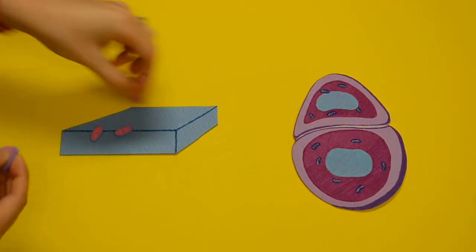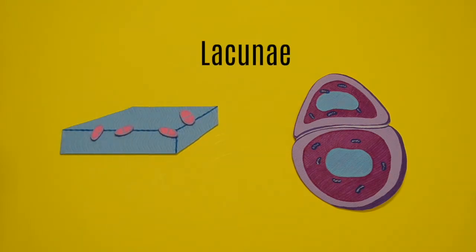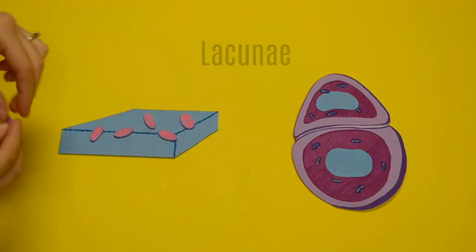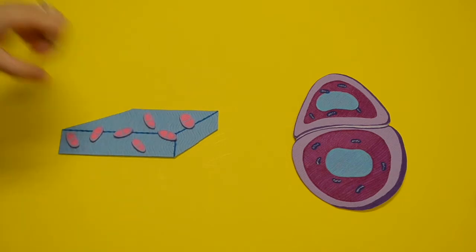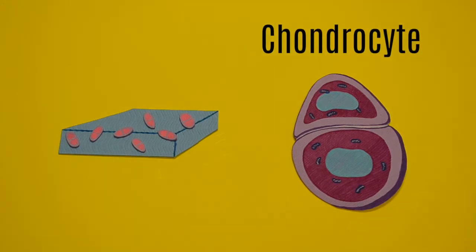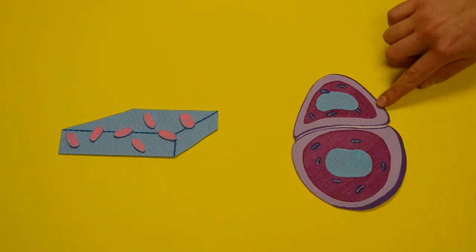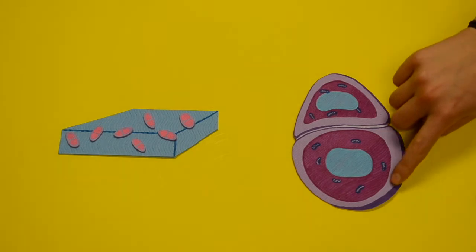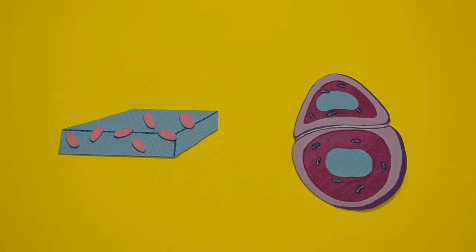Chondroblasts surround themselves with the matrix they produce and form a lacunae. Lacunae is the Latin word for lake. This is a void where the chondroblasts will sit in. When chondroblasts fill the lacunae they are then referred to as chondrocytes. It is important to note that the chondrocyte is the same mesenchymal stem cell that we call a chondroblast, just in a different state that has matured and doesn't produce the extracellular matrix. Here we can see a chondrocyte. The chondroblast has engulfed itself with its own matrix, and the gap here can be referred to as a lacunae.